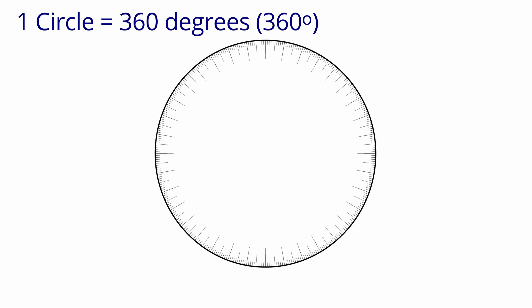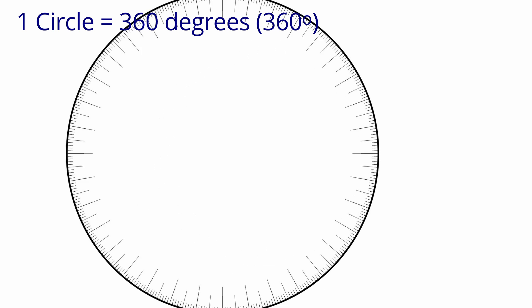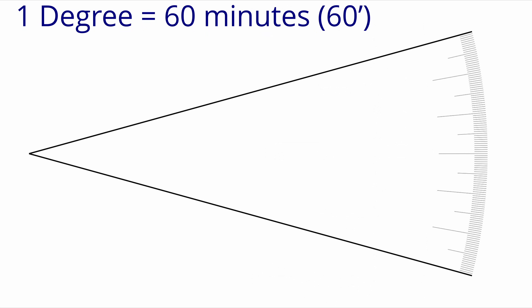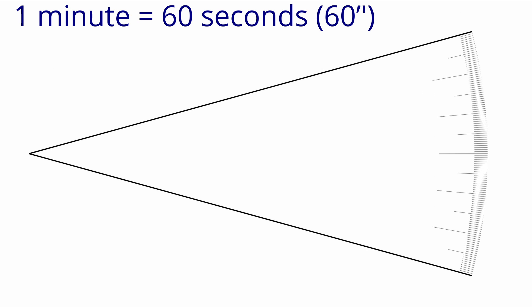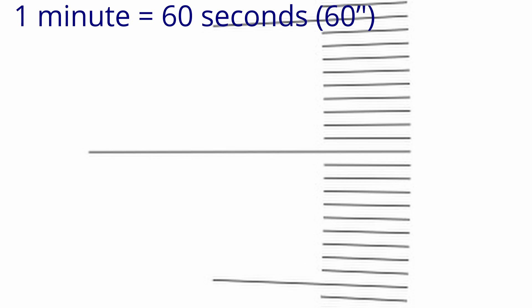Firstly, you need to remember from your school geometry lessons that a circle is divided into 360 degrees, each degree can be divided into 60 minutes, and each minute has 60 seconds. This can be slightly confusing if you're not used to adding and subtracting in degrees and minutes, so it may help to think about it as hours, minutes and seconds rather than degrees, minutes and seconds — because we're more used to hours.